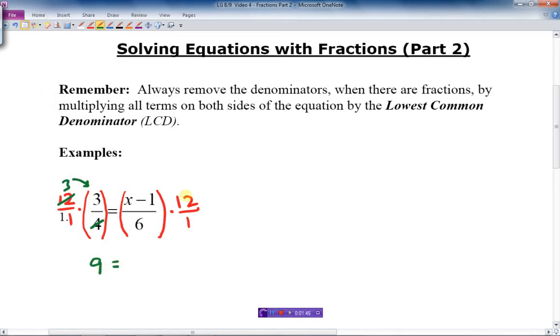Equal sign. 6 goes into 12 twice. And then we've got 2, so we've got x minus 1. And it's going to be multiply this by 2. Let's just write it out like that so we can see what we're doing. Now what we're going to do is we're going to multiply this out. So 9 equals 2 times x is 2x, and 2 times negative 1 is negative 2.